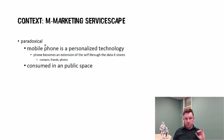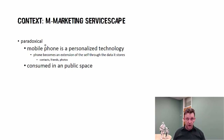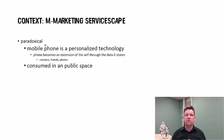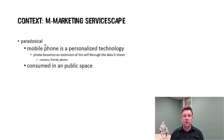A key thing to remember is that the mobile marketing servicescape is paradoxical. It's a private device that's visible in public. It's a gateway to other people — a very personal device. You know it's a personal device because when somebody else picks up your phone and starts to look at it, you've got that sense of intrusion. You also know it's personal because if you drop it and you apologize to the phone, you know you've got the personal connection to it.